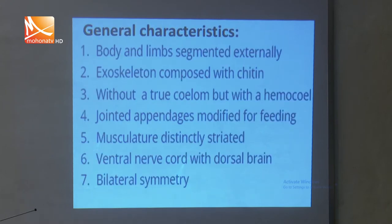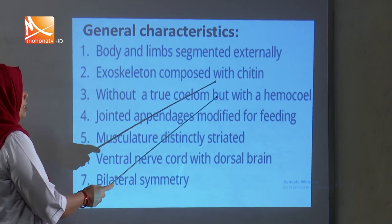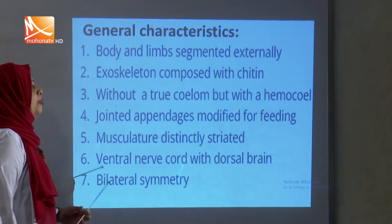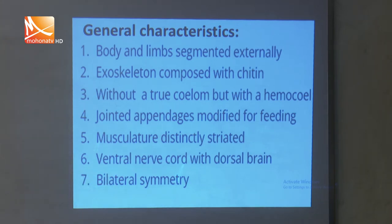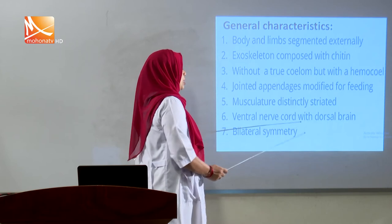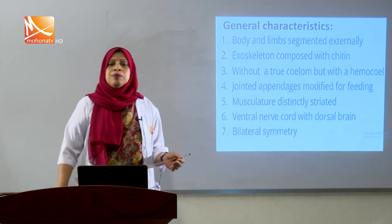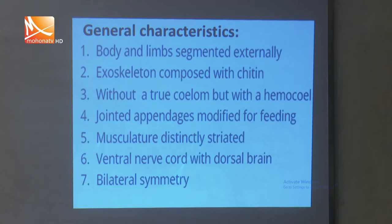The general characteristics of Poikiloceras pictus include: body and limbs are segmented externally; exoskeleton composed of chitin; without a true coelom, but with a haemocoel — a condition where the mesodermal peritoneal membrane is absent and the coelom is filled with blood. Jointed appendages modified for feeding, musculature distinctly striated, ventral nerve cord with dorsal brain, bilateral symmetry, open blood circulatory system, respiration by tracheal system, excretion by Malpighian tubules, and incomplete metamorphosis.